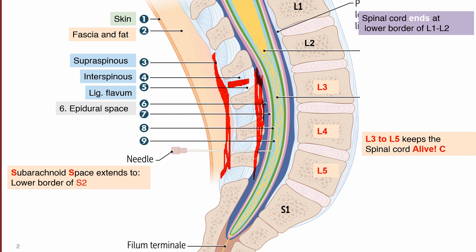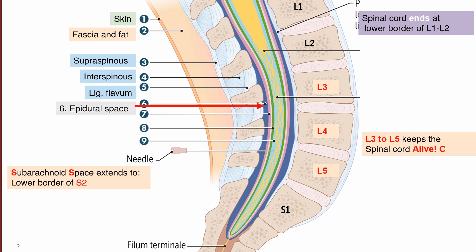After the ligamentum flavum, we will reach the epidural space. For example, this is where an epidural anesthesia needle would end. The needle goes through the skin, subcutaneous fat, supraspinous ligament, interspinous ligament, and ligamentum flavum, ending in the epidural space. Following the epidural space, we now reach the dura mater of the spinal cord.